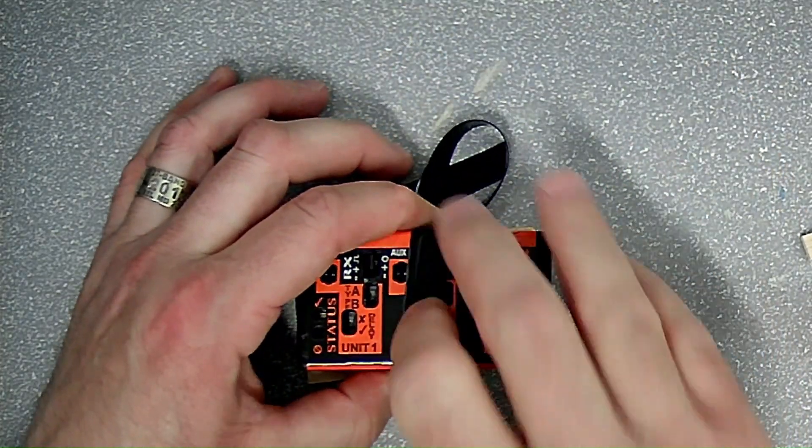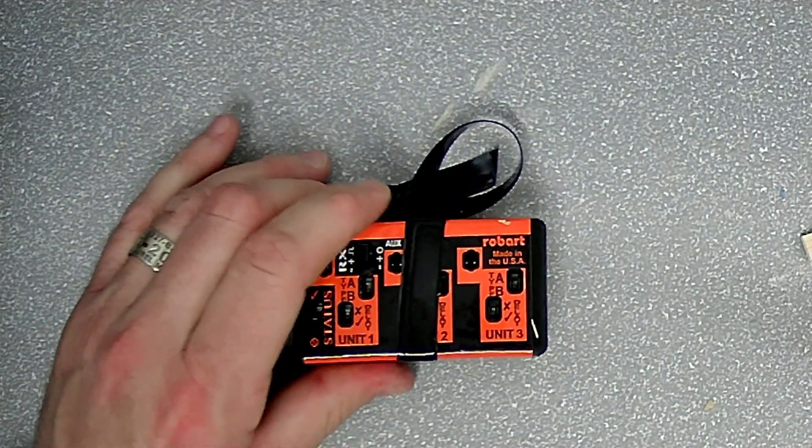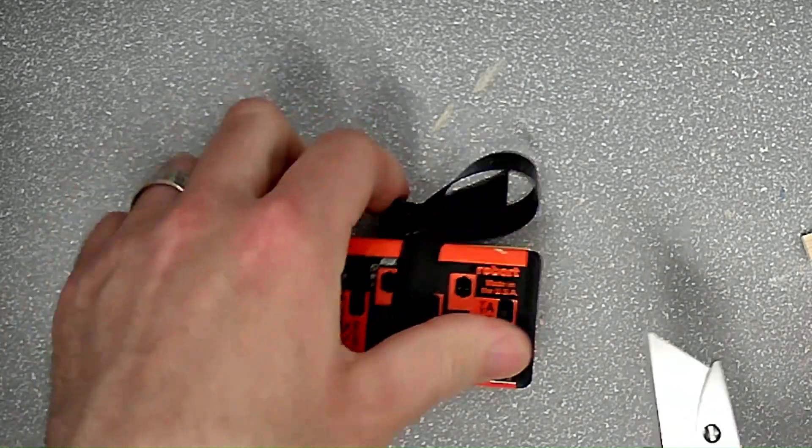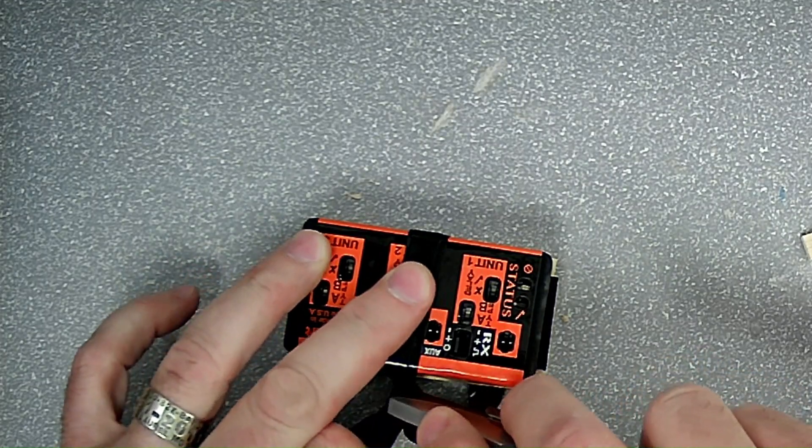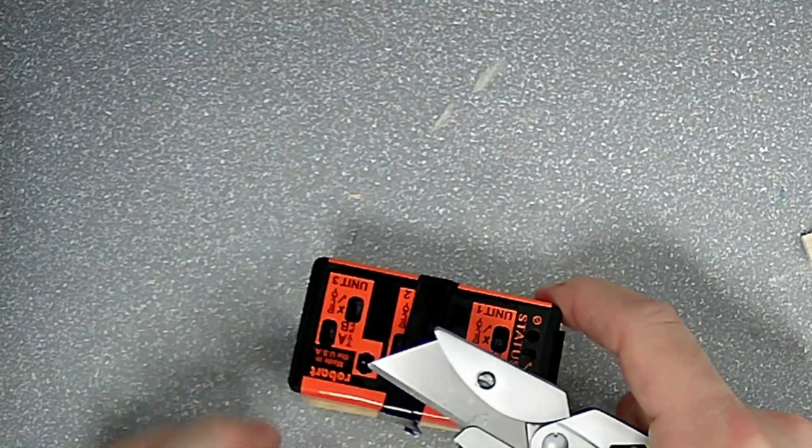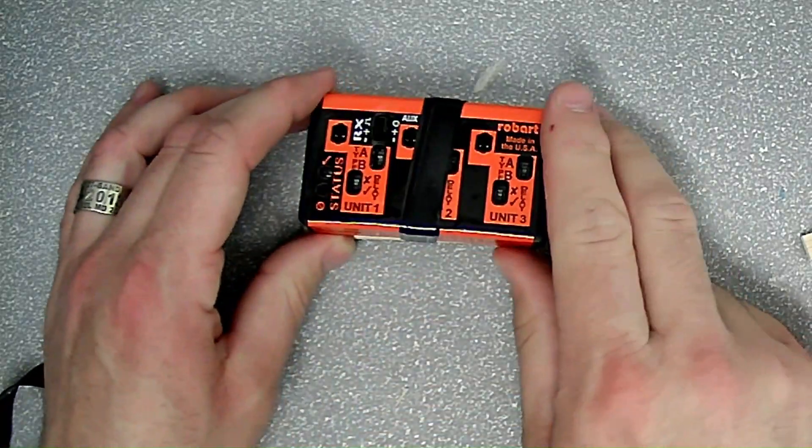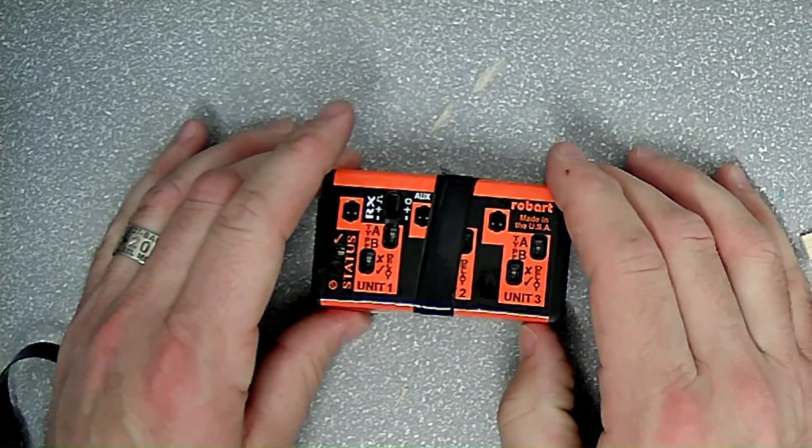Give it a little massage to get the tape to catch. Cut off the excess. And we now have your mounting for your control box.